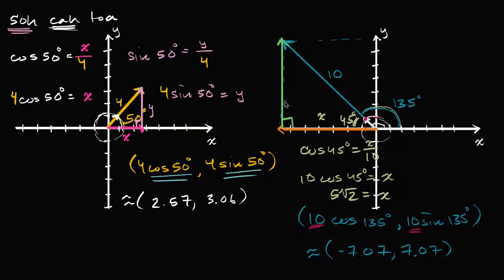With the right triangle approach we find only the magnitude of the side, then we reason about direction: we're going 5 square roots of 2 to the left, so the x-component is negative 5 square roots of 2. And using the same reasoning, 10 times sine of 45 degrees gives us the y-component, which is positive 5 square roots of 2. If we use the calculator, these evaluate to approximately the values we found before.